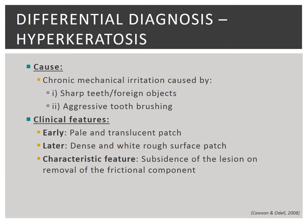Hyperkeratosis is commonly a result of chronic mechanical irritation in the mouth. Histopathologically, the epithelium becomes hyperplastic with an increased thickness in the keratin layer. However, there is no evidence of dysplasia. Aetiological factors include abnormally sharp teeth, the presence of foreign objects in the mouth and aggressive tooth brushing. Clinically, hyperkeratosis initially appears as a pale and translucent patch but progresses to a dense and white rough surface in its later stages. A key feature of hyperkeratosis is the resolution of the lesion upon removal of the frictional component.